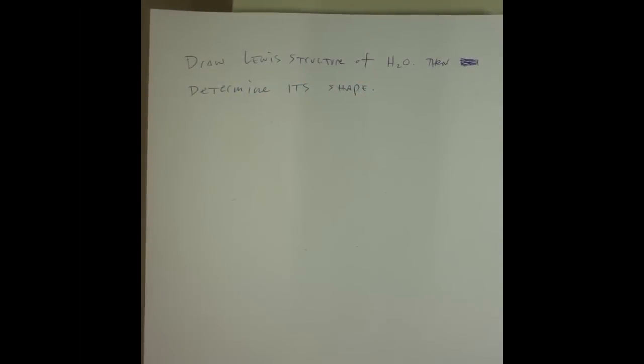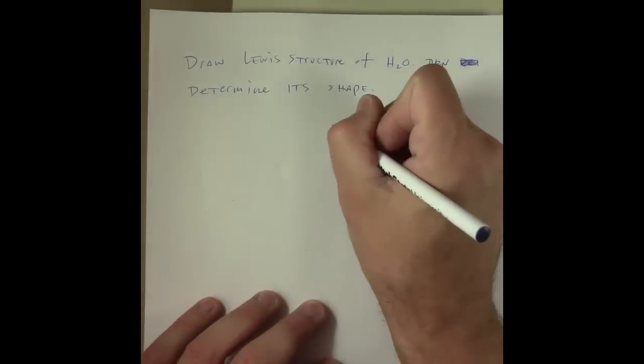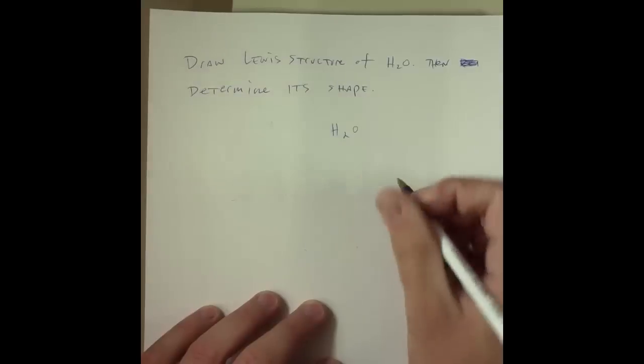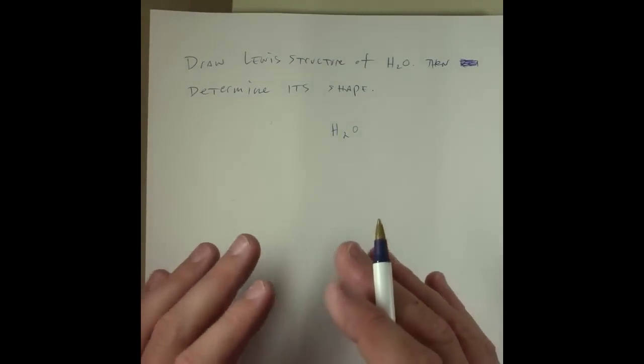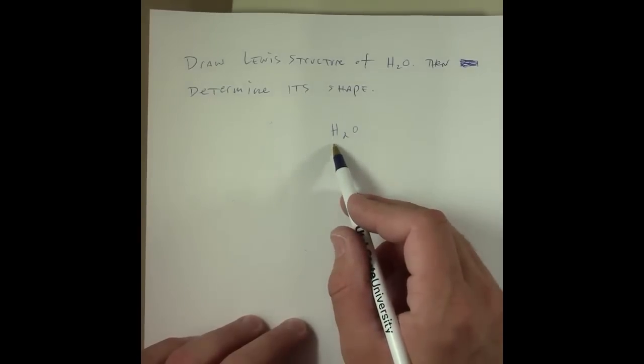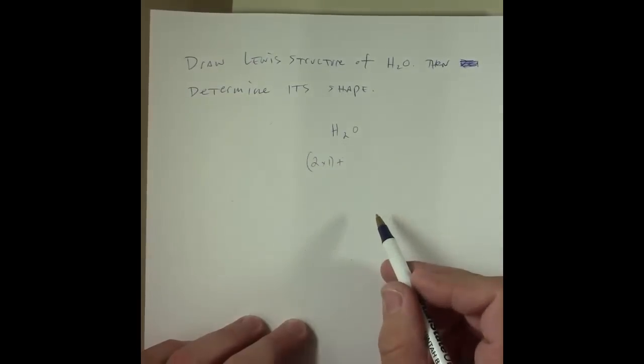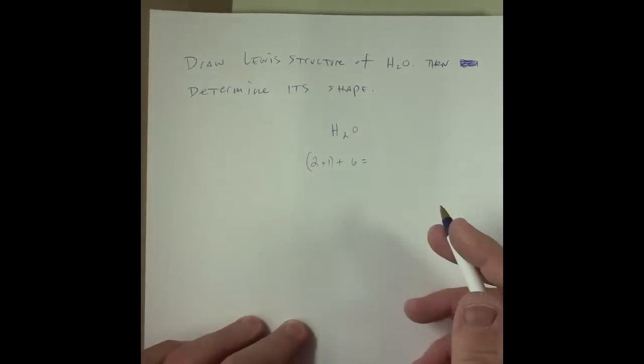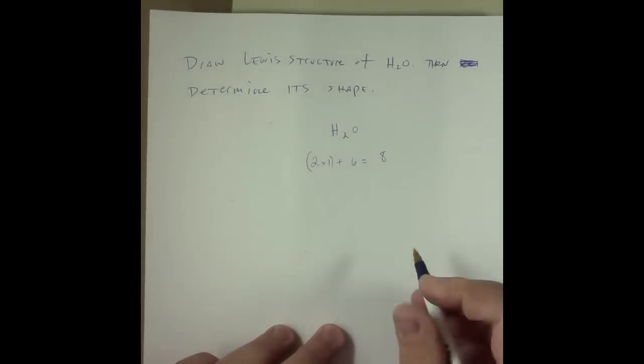This question asks us to draw the Lewis structure of water and then determine its shape. As I've discussed in an earlier video, to determine the Lewis structure of a compound, we first will write out the compound's formula, H2O, and we determine how many valence electrons each of the atoms in that molecule has. As you should recognize, each hydrogen has one valence electron and there are two of them. And oxygen, being in group 6A of the periodic table, has six. Therefore, the total number of valence electrons we have to play with in this molecule is eight.